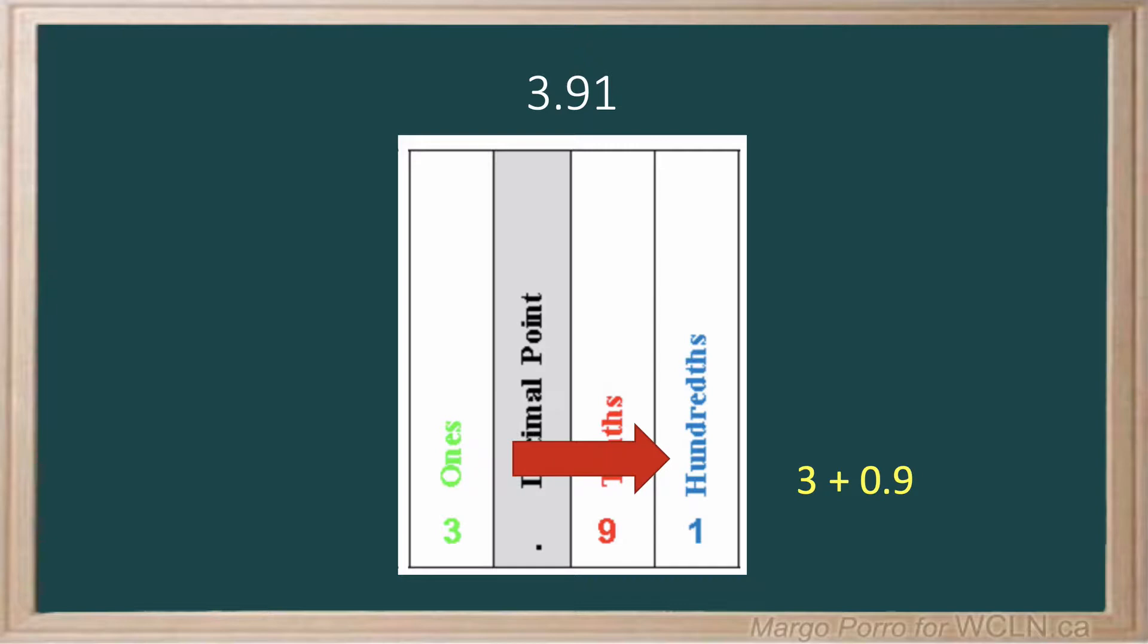The 1 is in the hundredths place, two places over from the decimal. Show 0 and a decimal point to hold the place before the decimal.